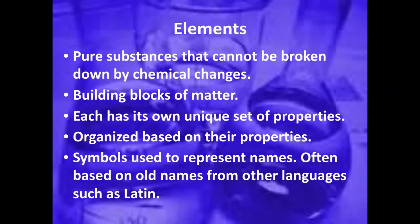The elements all have their own set of properties — different features that cause them to be unique from each other. Some are metals, some are gases, some are hard, some are soft, and we'll look at those properties as we go along. They're organized on the periodic table by those properties. They're also symbolized on the periodic table to represent their names. Some of these are obvious from the first letter of the element; others may not be so obvious because they come from different languages, such as a Latin name.